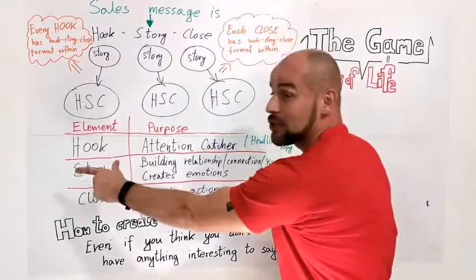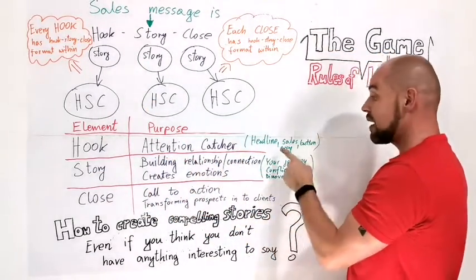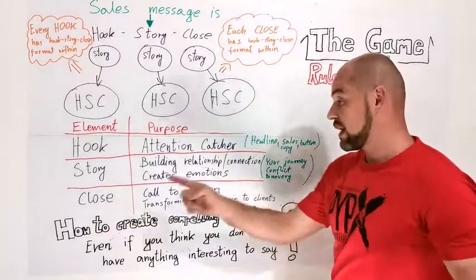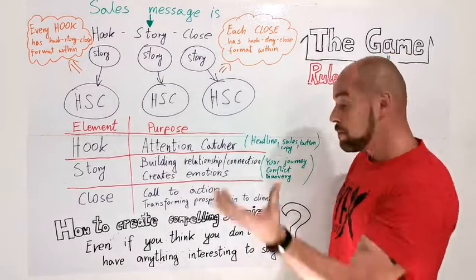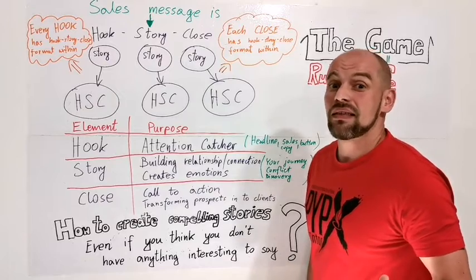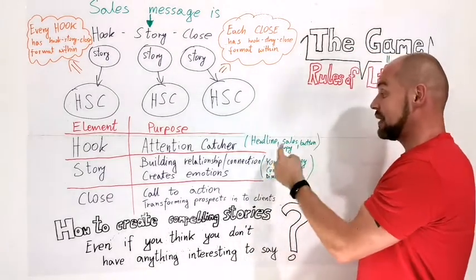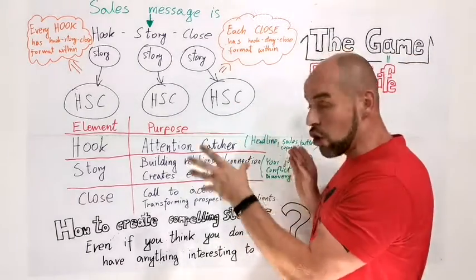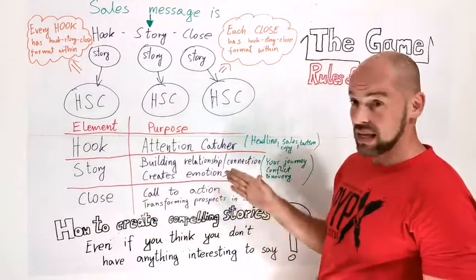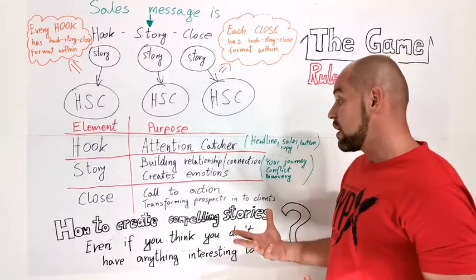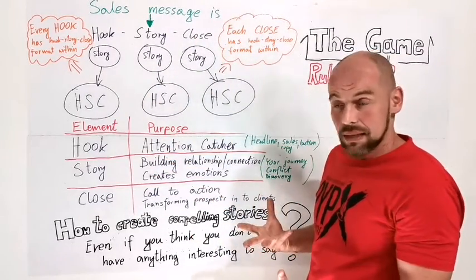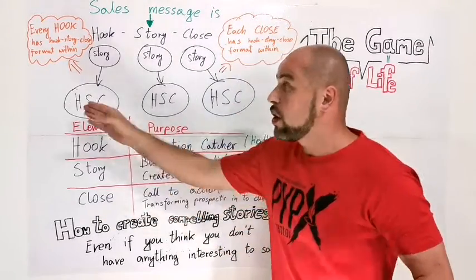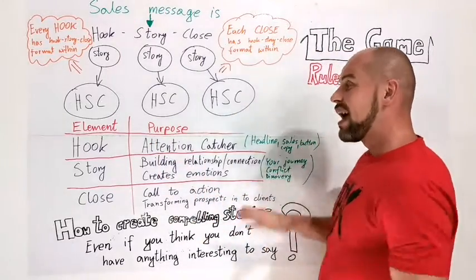To give you an example: the hook is an attention catcher. In my bigger story, it can just be a headline. For my class, the introduction — this class will be about how to create compelling stories even if you think there's nothing interesting to say — that's my headline, my title. Then the sales copy will be the story within my hook, and the button will be the close within my hook. That takes me to the next step: the story itself, which can be my origin story or the content of my class, discussing your journey — and within each part there's a smaller hook, story, and close.